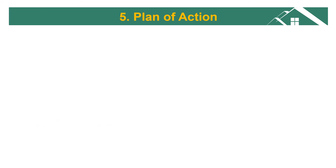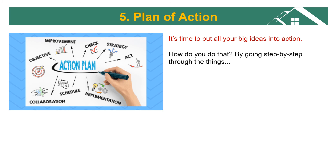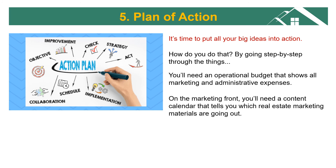Number five: your plan of action. Your marketing plan is almost ready, but you still have a little bit of work to do — it's time to put all your big ideas into action. Go step by step through the things you'll need to address to open the doors, market your services, and keep the lights on. You'll need an operational budget that shows all marketing and administrative expenses, you'll need to know how much staffing is required, you'll need a content calendar that tells you which real estate marketing materials are going out and when, and a list of vendors that can help with the heavy lifting.